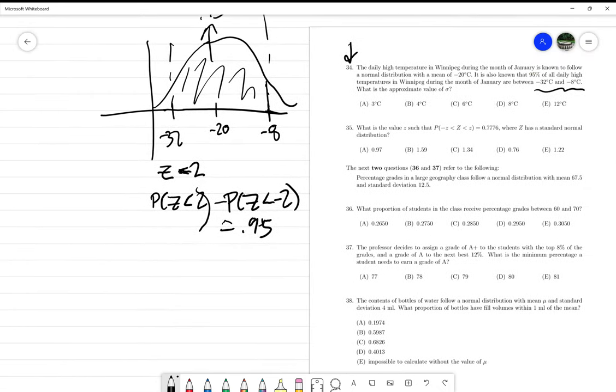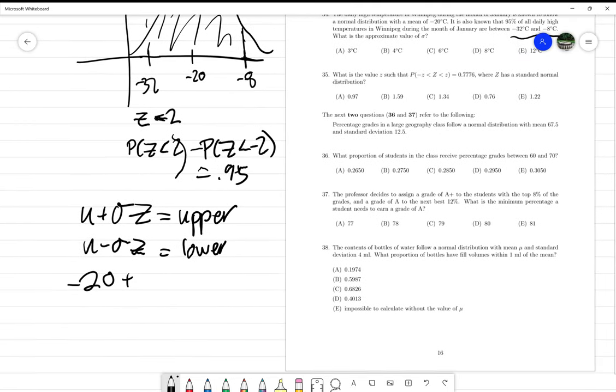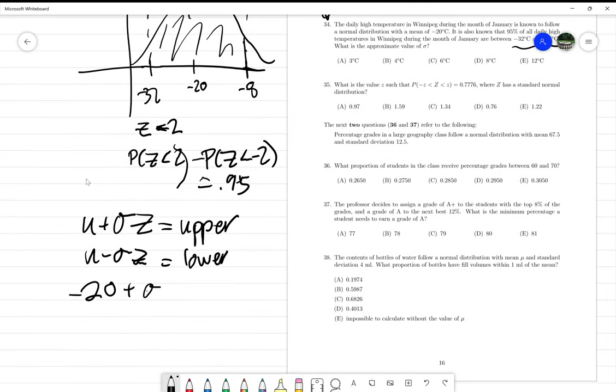Let's set up the equation first. Mu plus sigma times z gives you the upper bound, and mu minus sigma times z gives you the lower bound. That's going to be -20 plus sigma (which is unknown here), and our z-value is 2, and that's going to be -8.